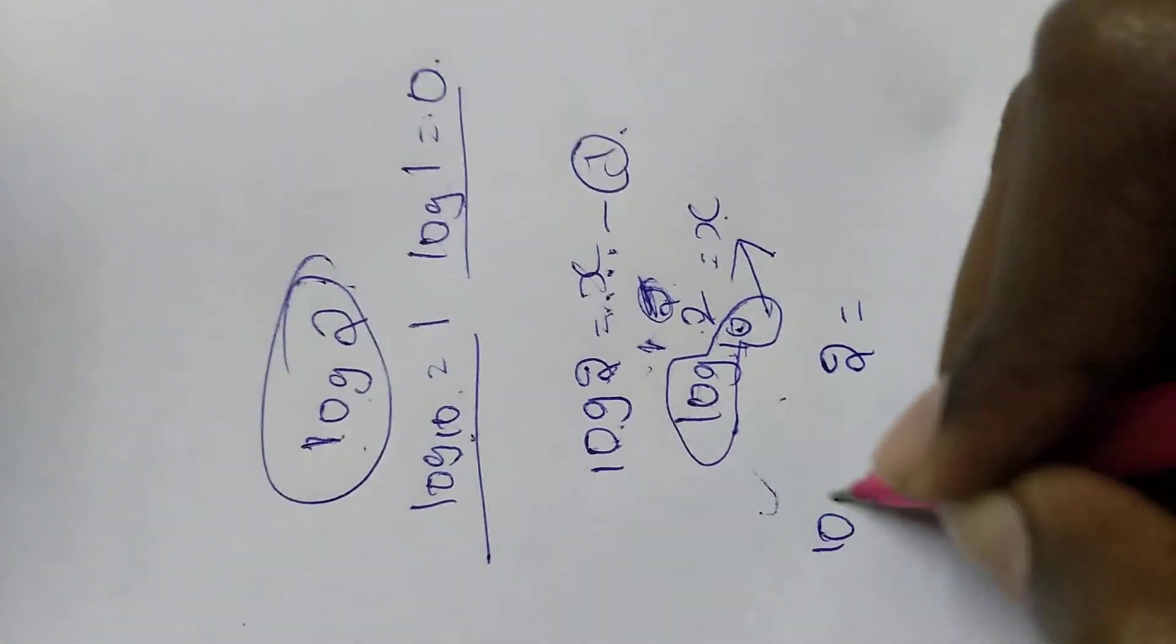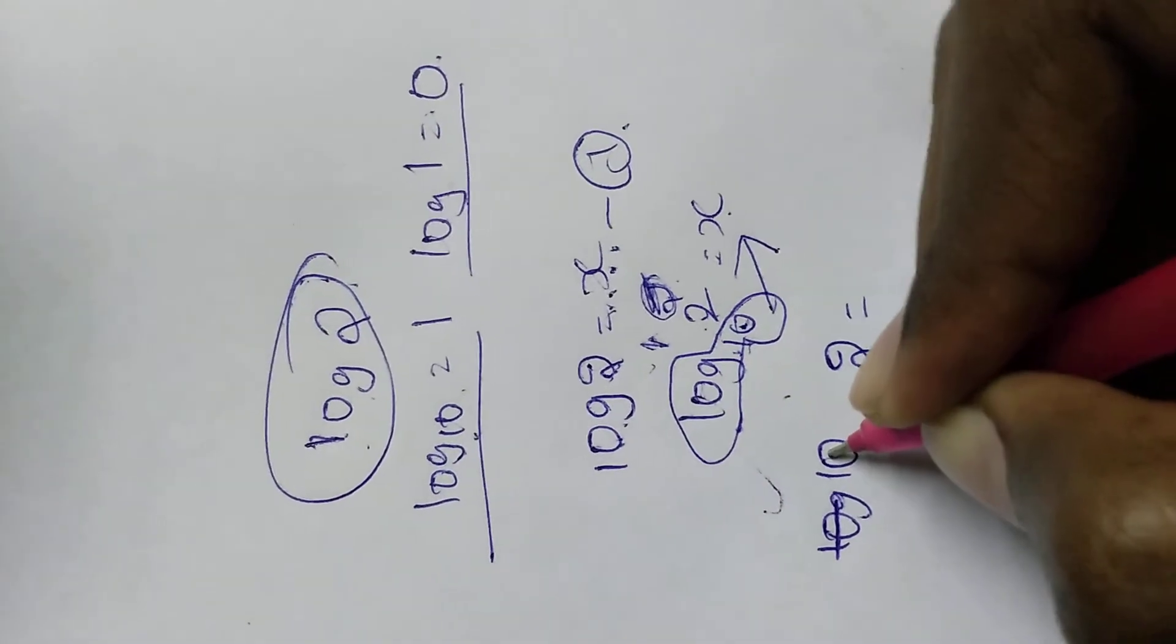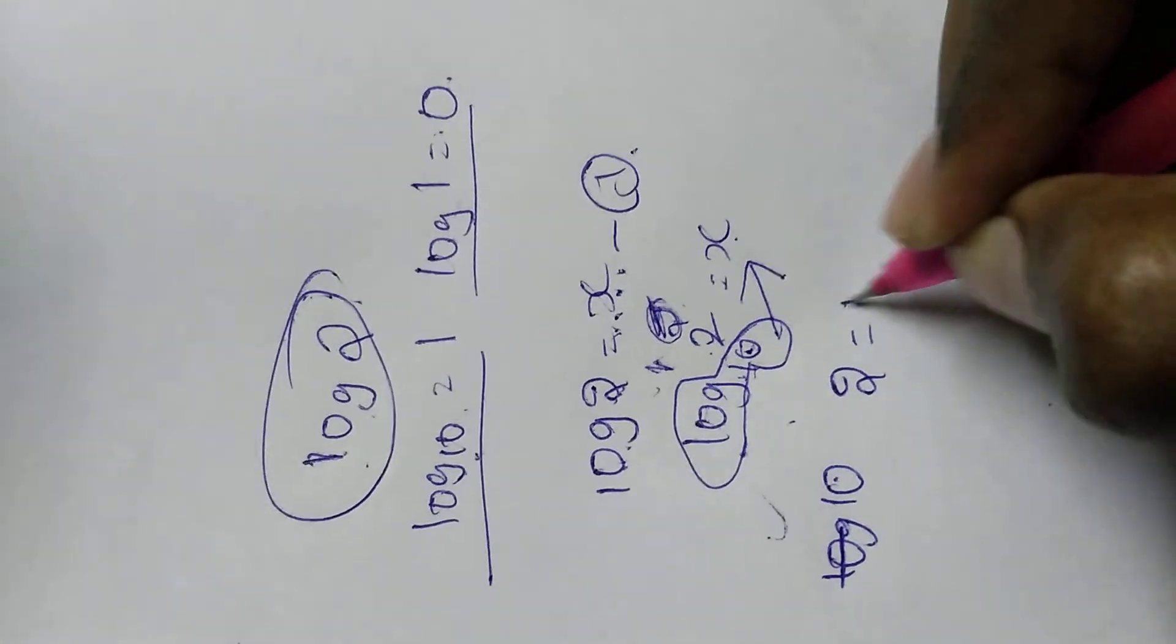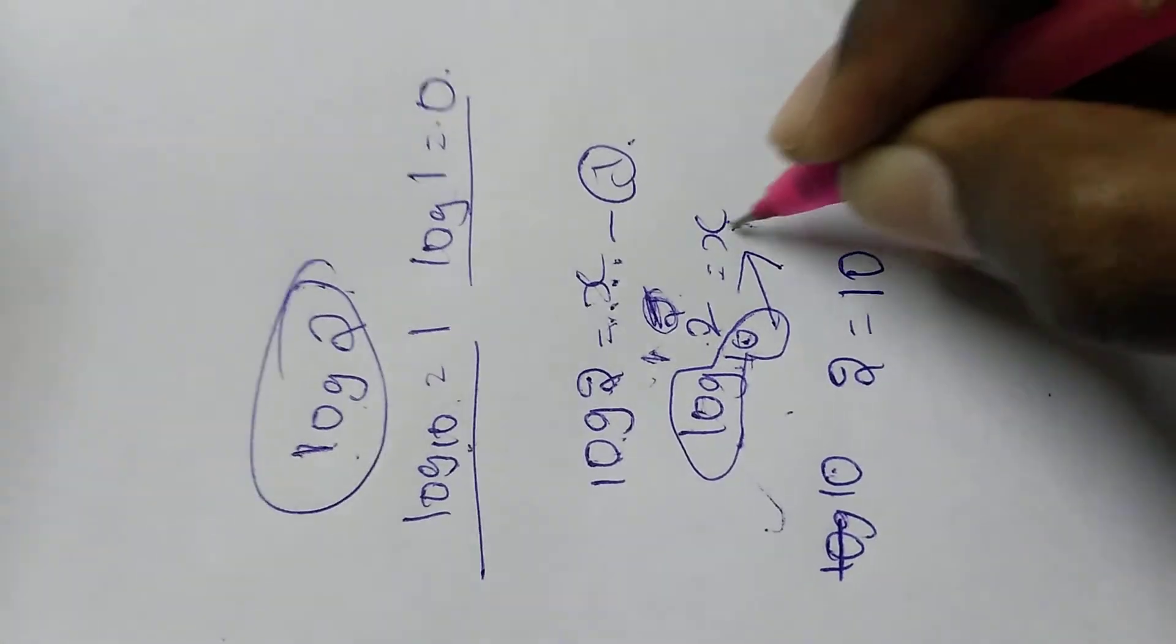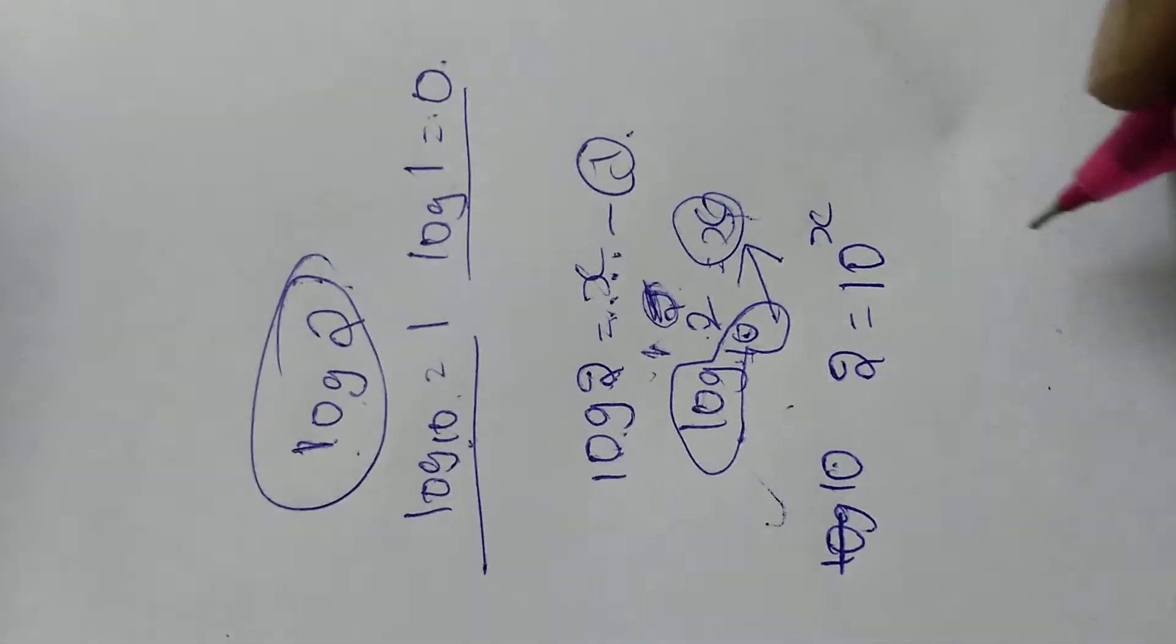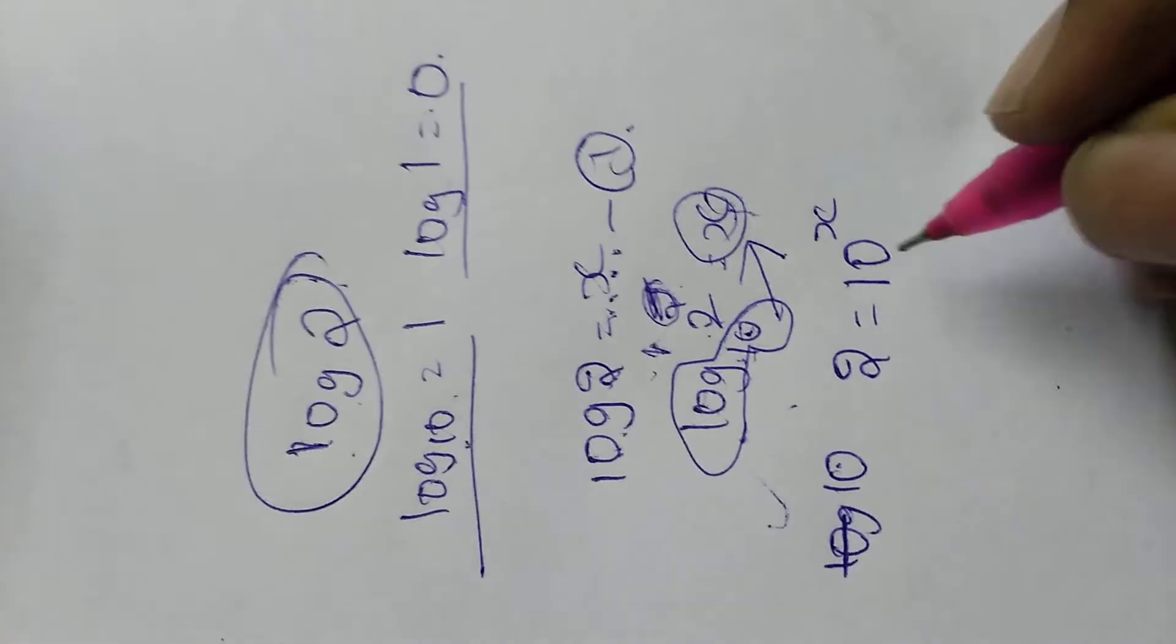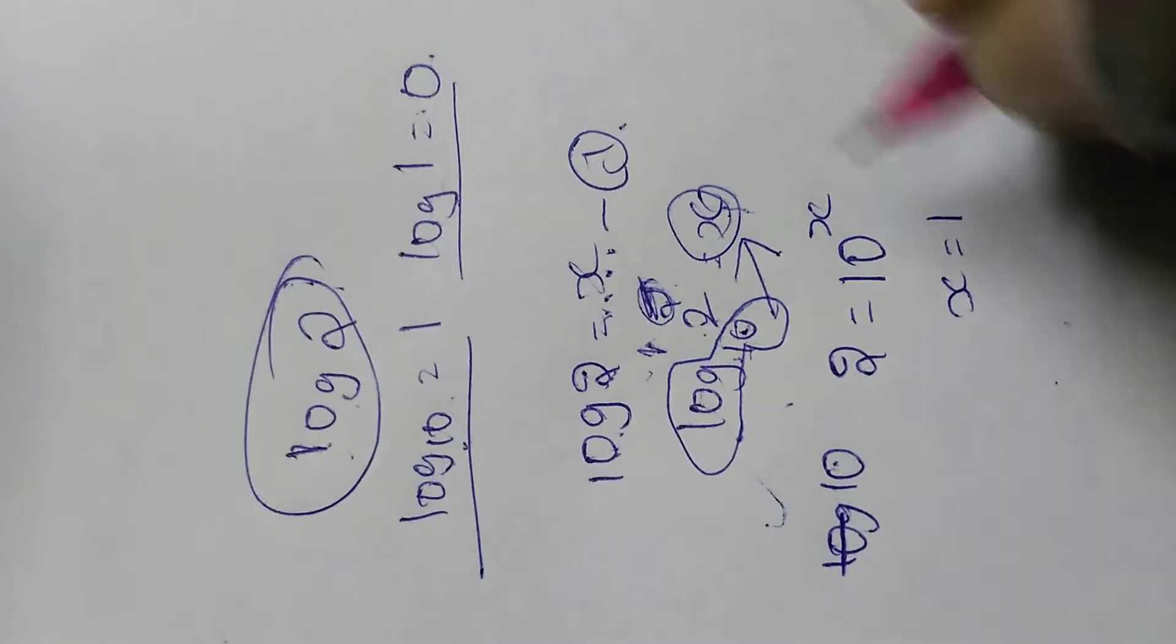So we had moved the log 10. Log will be removed and 10 will become as base, so 10 becomes base and the x, obviously x will become power. So log will be removed, 10 becomes base, x becomes the power. So 2 equals to 10 power x.